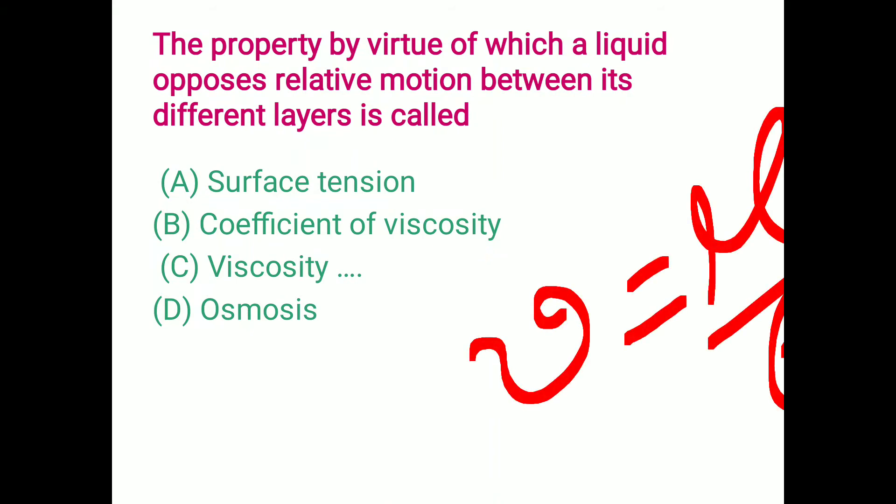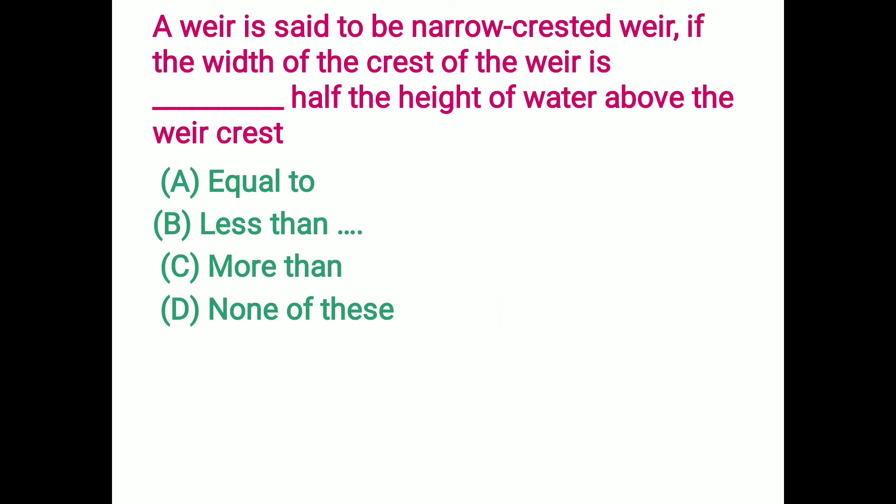According to this, we have problems also. A weir is said to be a narrow crested weir if the width of the crest of the weir is less than half of the height of water above the weir crest. So option B is the correct answer regarding the narrow crested weir.